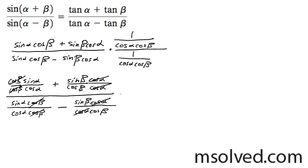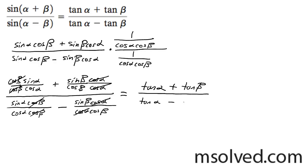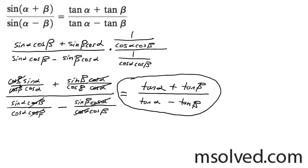So I'm going to be left with the numerator tangent alpha plus tangent beta, all over tangent alpha minus tangent beta, which is what we're looking for in the first place. That's it, there you have it.